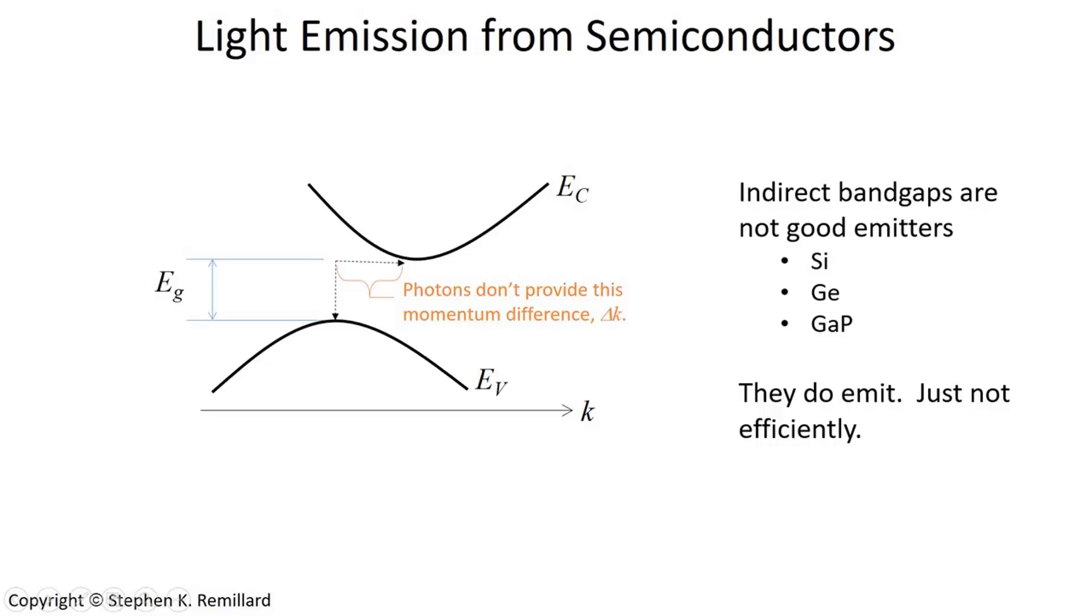Examples I would give you are silicon, germanium, and gallium phosphide. I'm going to stick with gallium phosphide. They do emit, but they just don't do it efficiently. I'm going to talk about some of the tricks used to enable the emission of light.